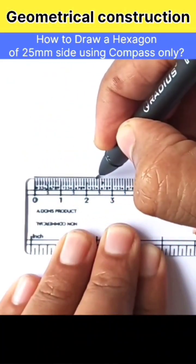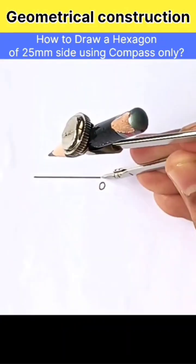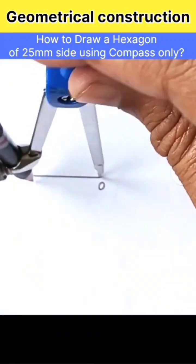First draw a circle with radius equal to the side of hexagon. Since the side is 25 mm, set your compass to 25 mm and draw a circle.